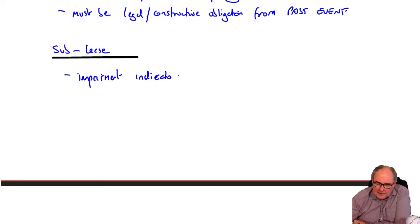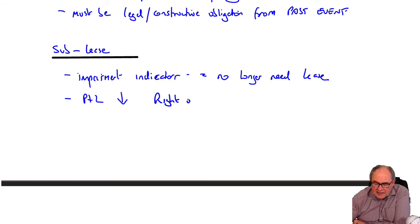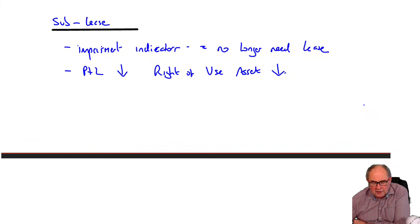So there is an impairment indicator, and that is they no longer need the lease. So the impact of that is that there'll be a reduction in profit or debit, and there'll also be a reduction in the carrying amount of the right-of-use asset. When tutors produce answers on that, have a look at those for the numbers, but otherwise I wouldn't heavily get into those numbers at all, certainly not today.